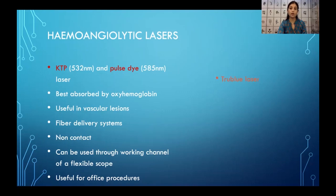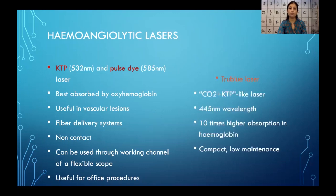The new kid on the block is the TrueBlue laser, which has been described as a CO2-plus-KTP-like laser with a wavelength of 445 nanometers. It is said to have 10 times higher absorption within hemoglobin, making it perfect for vascular lesions. It is also a very compact and sturdy machine with low maintenance.